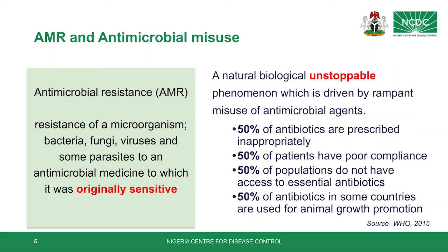According to a publication on the WHO website around 2015, it is estimated that 50% of antibiotics are prescribed inappropriately. And because we are looking at approaching antimicrobial resistance in both animal and human health sectors, about 50% of these antibiotics in some of the countries surveyed are used for animal growth promotion. The One Health National AMR Action Plan is a national document aimed at addressing the burden and problems of antimicrobial resistance in both animal, human, and environmental sectors.